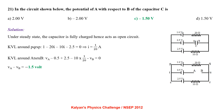In the circuit shown, the potential of A with respect to B of the capacitor C. Under steady state, the capacitor acts as an open circuit. Applying KVL around loop PQRSP: 1 − 20I − 10I − 2.5 = 0, giving I = 1/20 A. Applying KVL around loop ATSRUB: VA − 0.5 + 2.5 − 10I(1/20) − VB = 0, giving VA − VB = −1.5V.